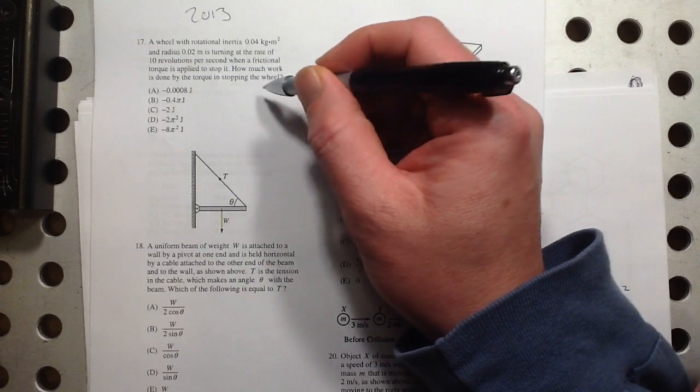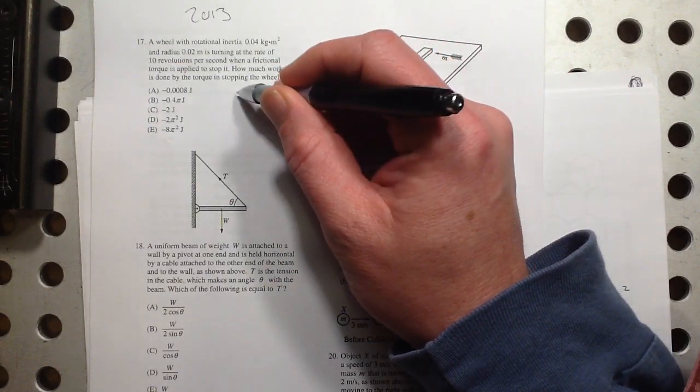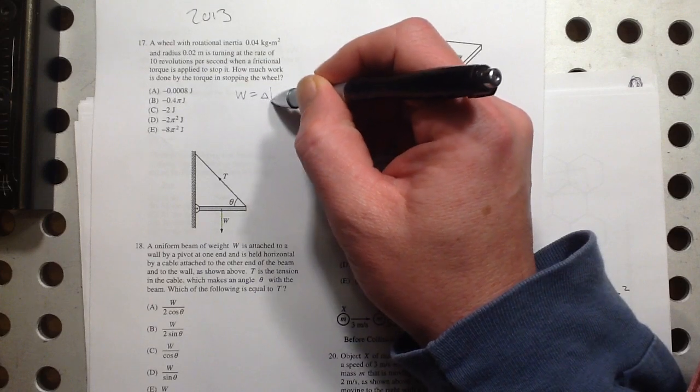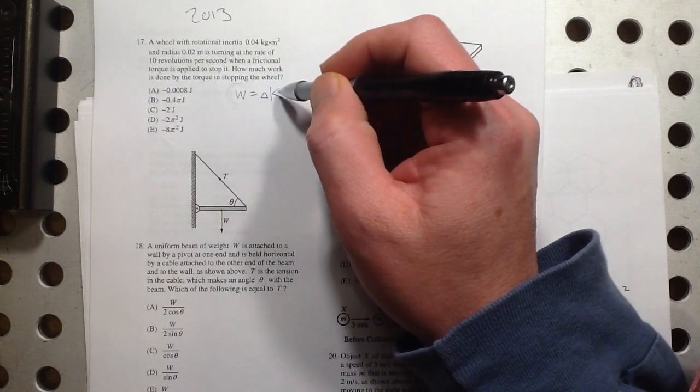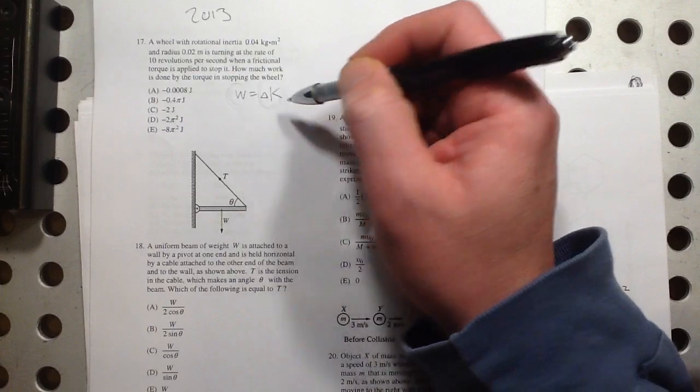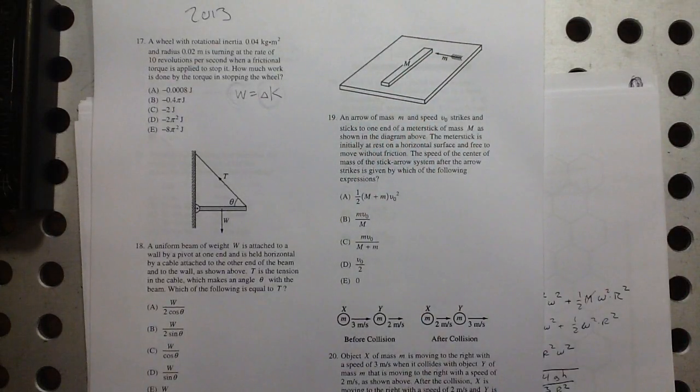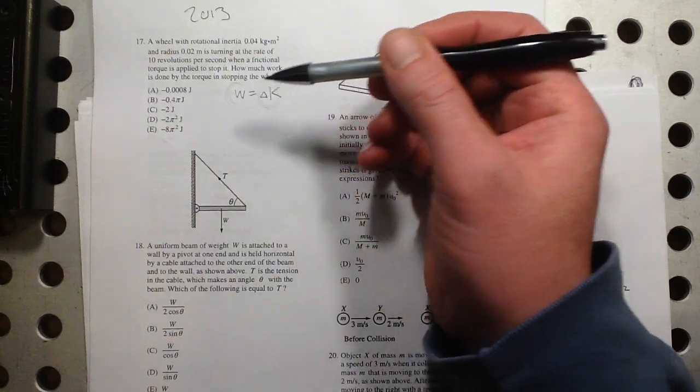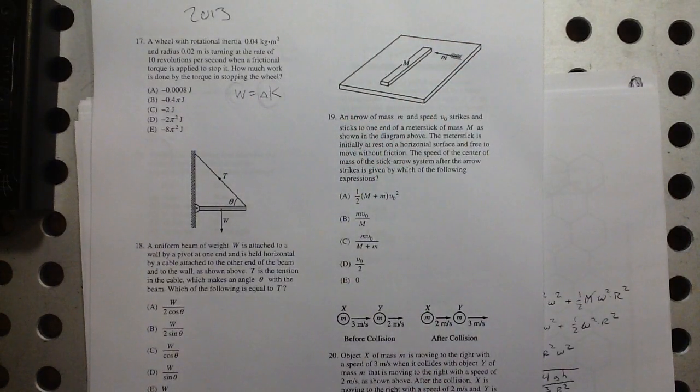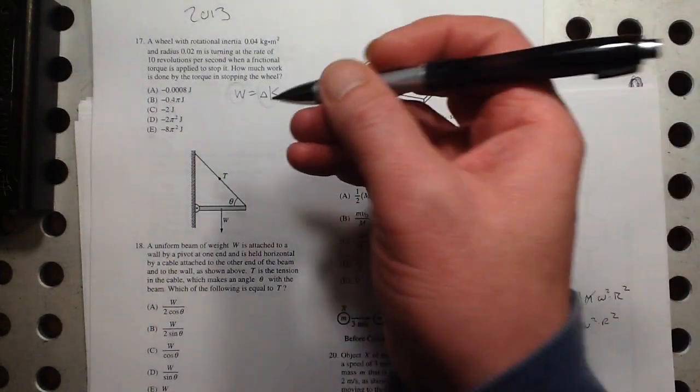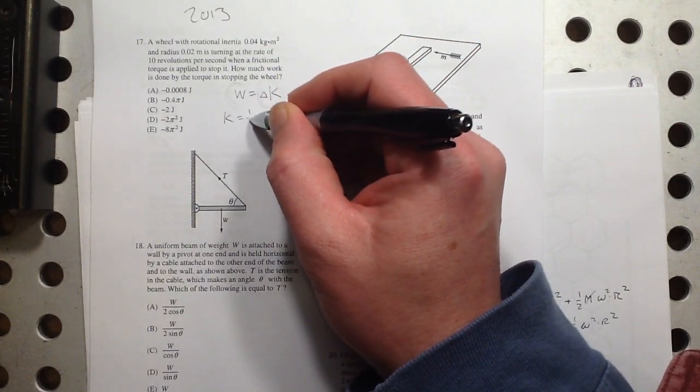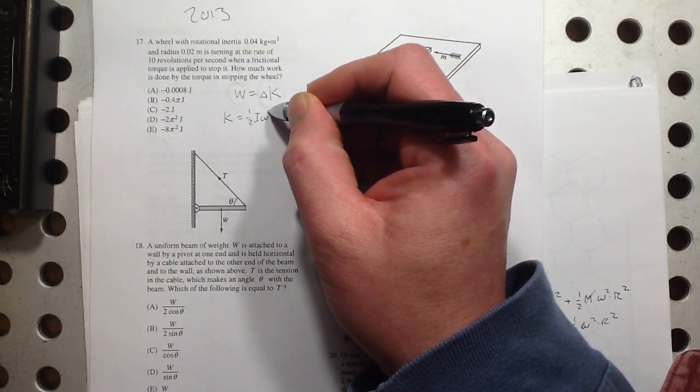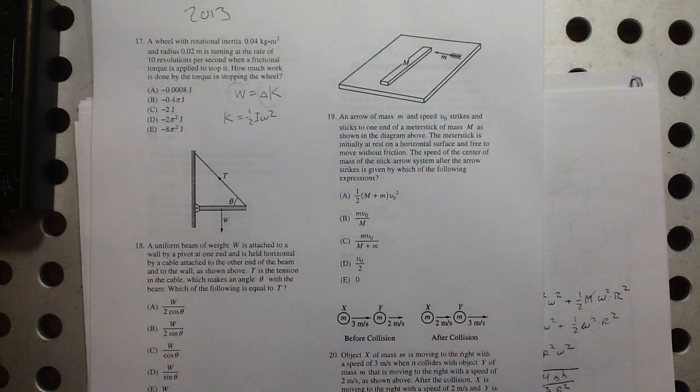Well, the amount of work that's done to stop it is all of the work needed to stop it, taking all of the kinetic energy away. So if you know how much kinetic energy it has, that's how much work you need to do to stop it. You need to take all that kinetic energy away. So we just need to figure out how much rotational kinetic energy does it have.